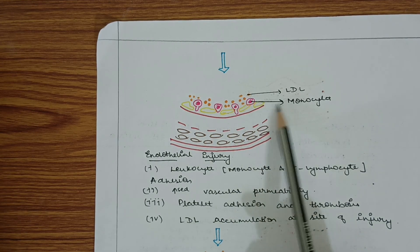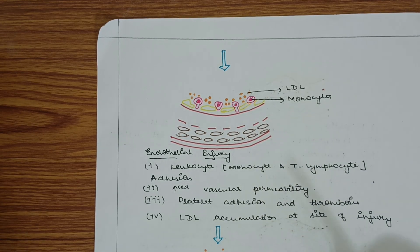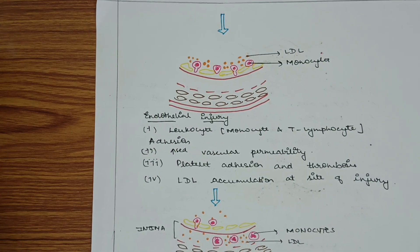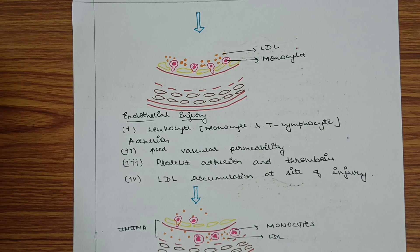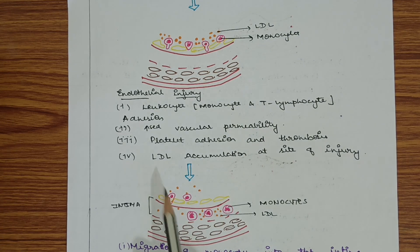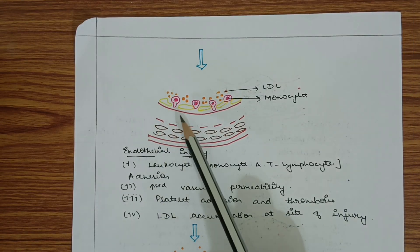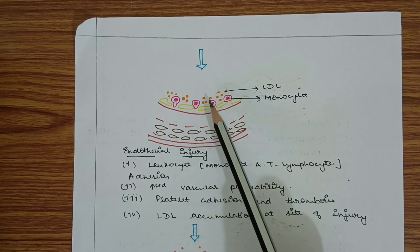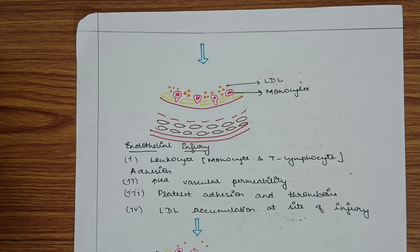Because of this injury, there will be increased vascular permeability, platelet adhesion, and thrombosis. There will also be accumulation of LDL at the site of injury. So there is leukocyte adhesion and aggregation, platelet adhesion, and LDL accumulation at the site of injury.